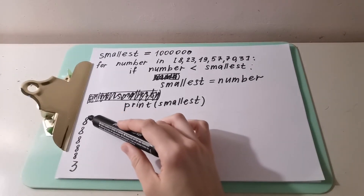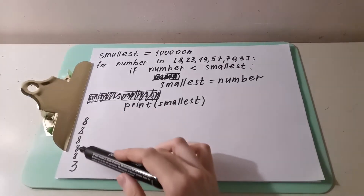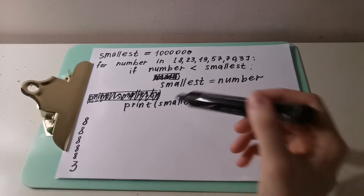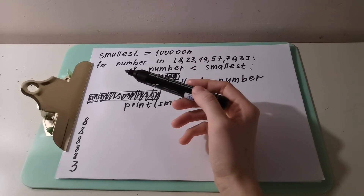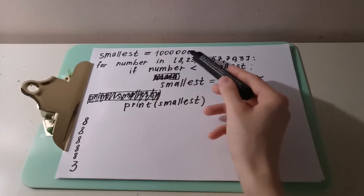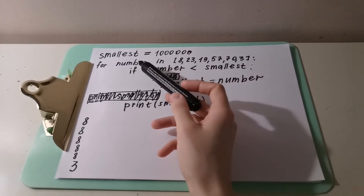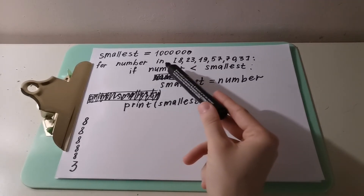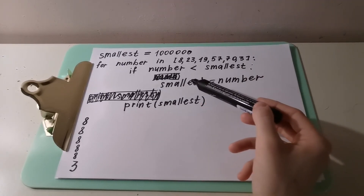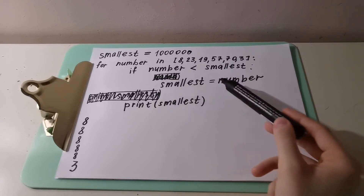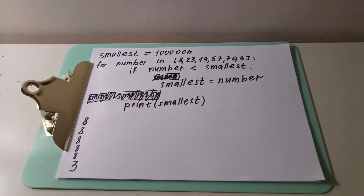So again, let's refresh and remember the code. First, we create the variable 'smallest' and set it to a very big value — one million. Then for each number in the list, if the number is less than smallest, then smallest takes the value of that number. Then print smallest. You can put the print line at any indentation level.